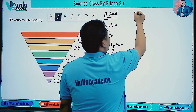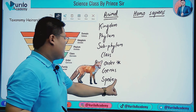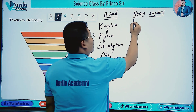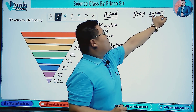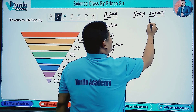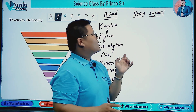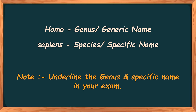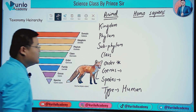Then come Genus and Species. There are two types of names. For example, the scientific name for humans is Homo sapiens. Homo represents the Genus, written with a capital letter, and sapiens represents the species, written in lowercase. Scientific names are written in italic font; when handwritten, they are underlined. Genus always starts with a capital letter.